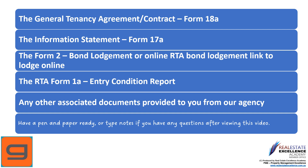You should have the following documents in front of you: the Form 18A General Tenancy Agreement contract, the RTA Form 17A information statement. Bond information and RTA lodgement links to lodge your bond online direct to the RTA, or the Form 2 bond lodgement, will be provided by our agency. The RTA Form 1A entry condition report will be provided to you on or before the day you take possession of the property — usually the day you pick up the keys. Any other associated documents from our agency will be included as well.